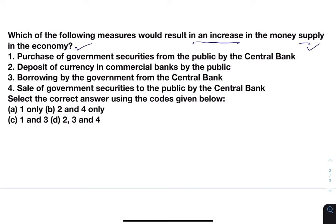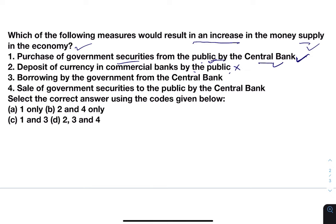The measures taken to increase the money supply: Purchase of government securities from the public by the central bank — if the central bank purchases securities from the public, the public will have more money, so yes, this will increase the money supply. Deposit of currency in commercial banks by the public — no, this will decrease the money supply with consumers. Borrowing by the government from the central bank — if the government borrows from the central bank then government will spend, so that will also increase the money supply.